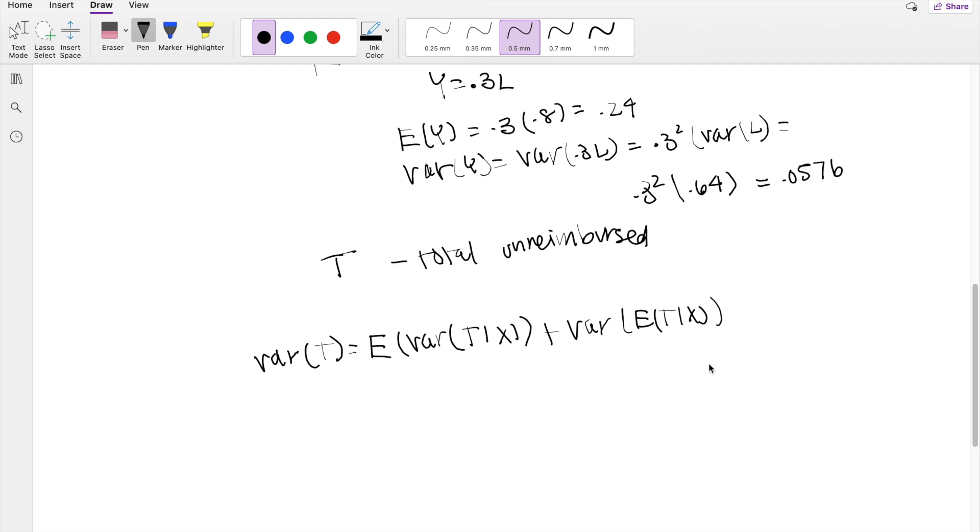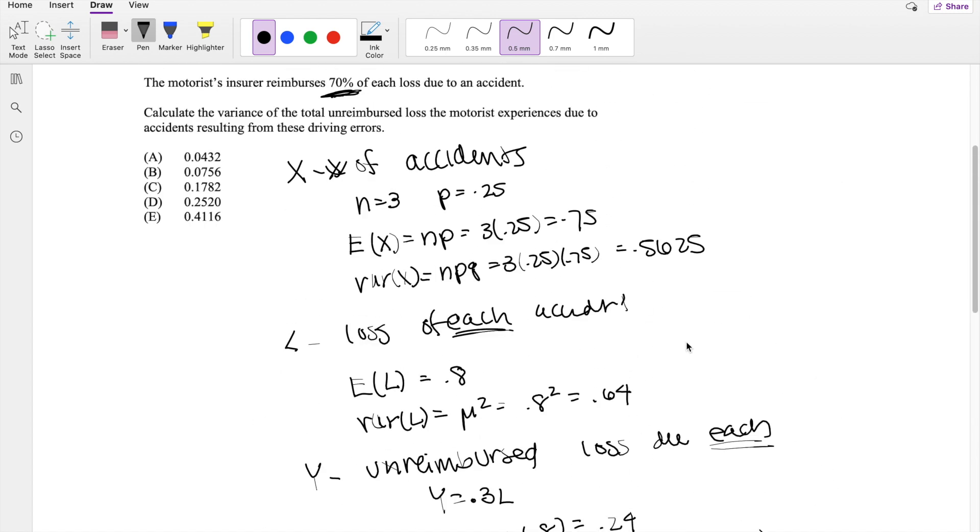Okay, so let's look at the inside. Like, for example, the value of T given X. So it's saying, what is the expected value of the total unreimbursed parts given that there are X accidents, right? Because X is the number of accidents.